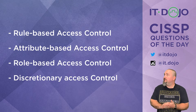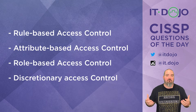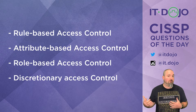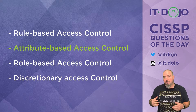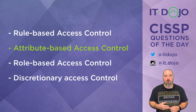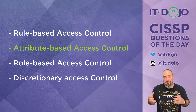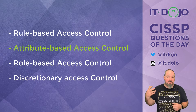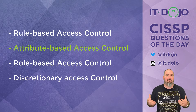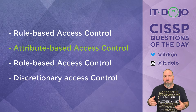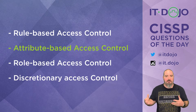This question is essentially asking you for the definition of attribute-based access control, which is the right answer. If you look at the traditional access control models, you go in and say that this subject has this level of access to this object — everything is predefined. You set permissions on the file for a particular subject to execute, read, or write to that object.